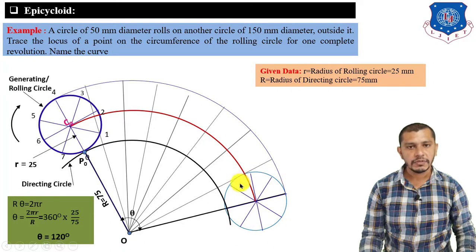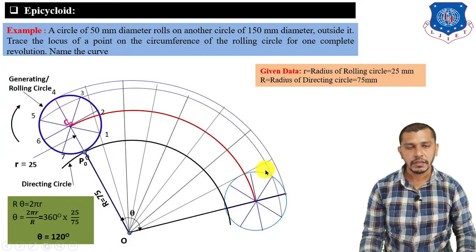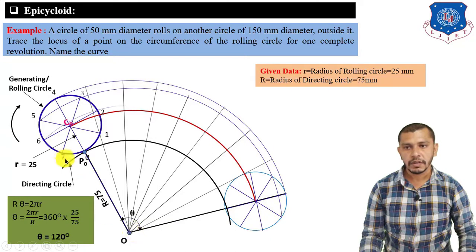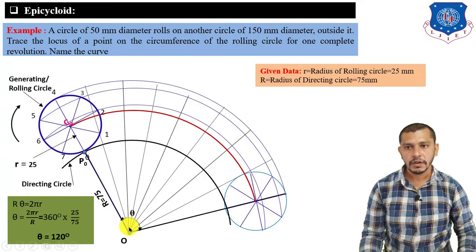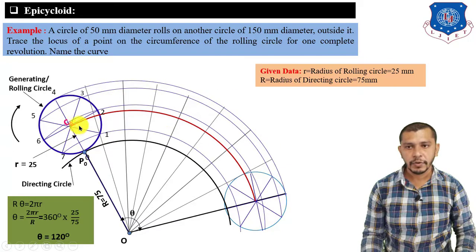Now take center at O with radius equal to O to 3 (or O to 5) and draw another arc; radius equal to O to 2 (or O to 6) draw another arc; radius equal to O to 1 (or O to 7) draw one more arc. After drawing these arcs, mark the intersection points of the center arc with the angle divisions.